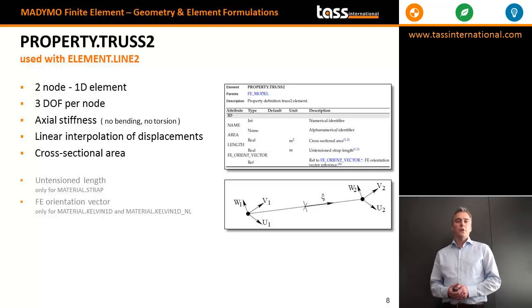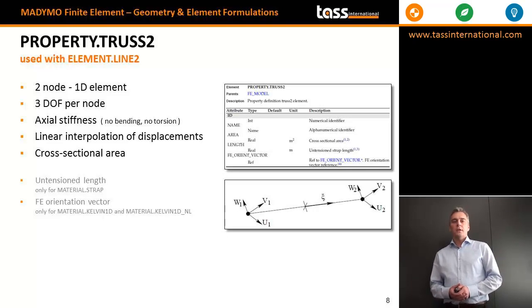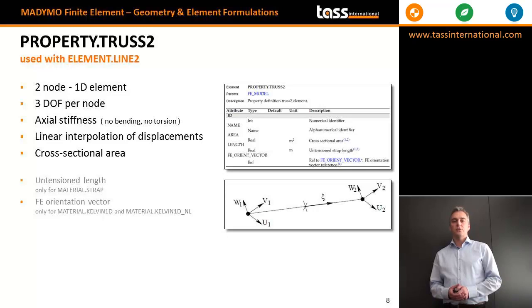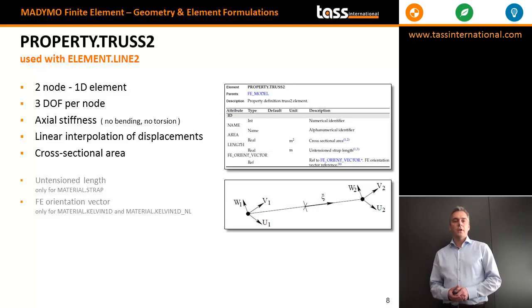Property truss2 is a 2-node 1D element with 3 degrees of freedom per node. The truss element can only resist axial stiffness — no bending and no torsion. Displacements in this element are interpolated linearly between the nodal displacements, and you need to define a cross-sectional area.